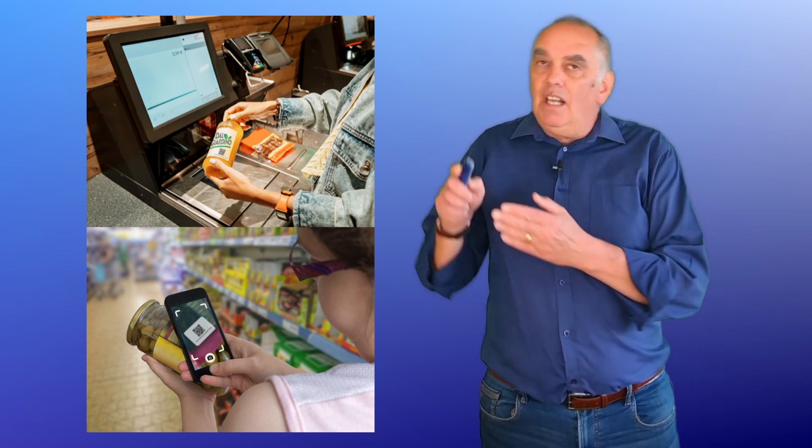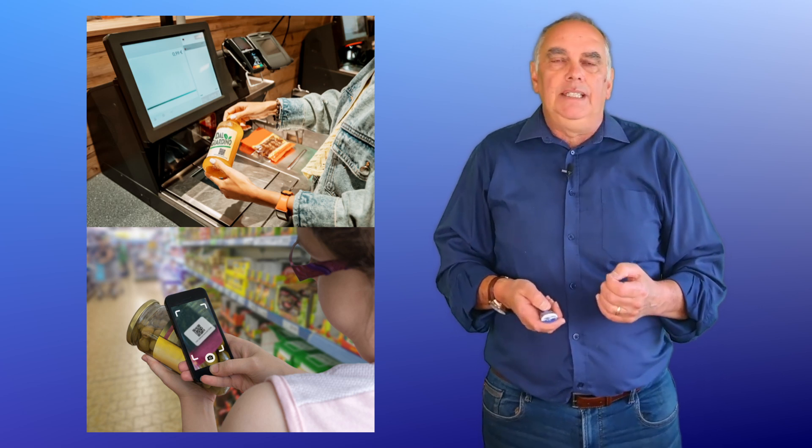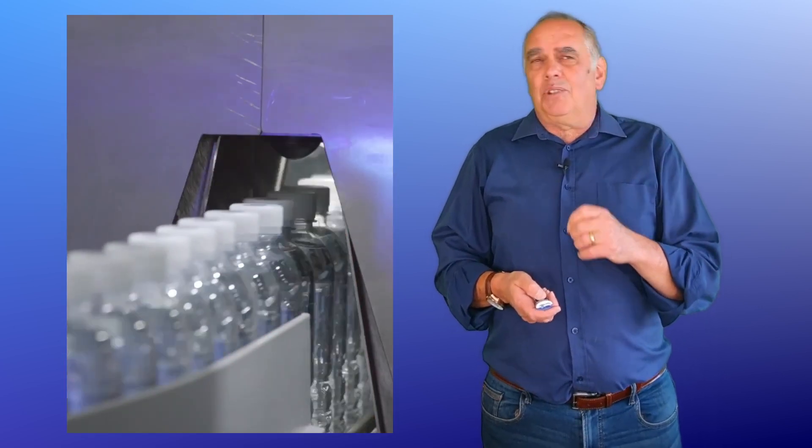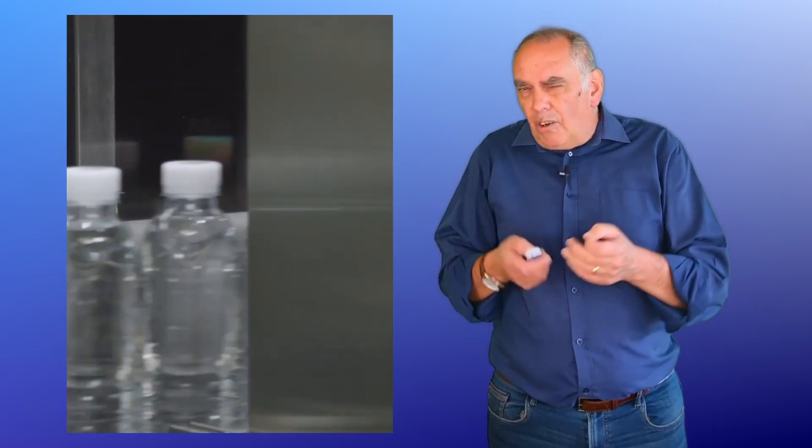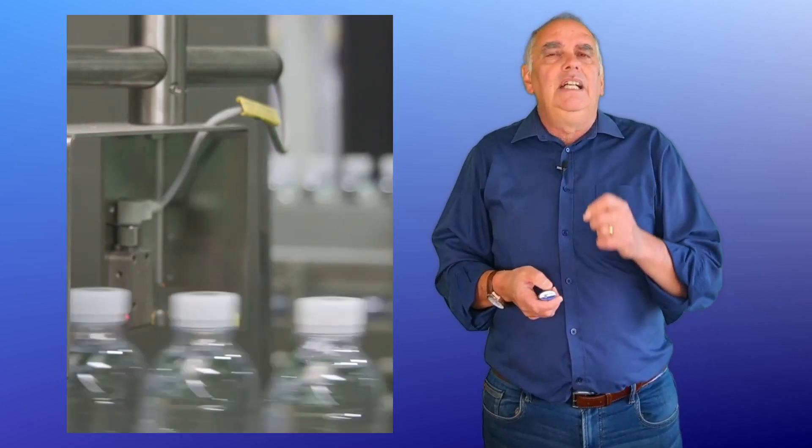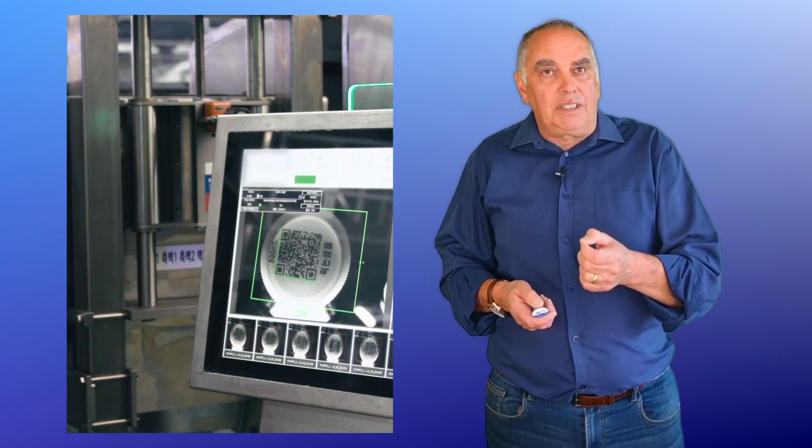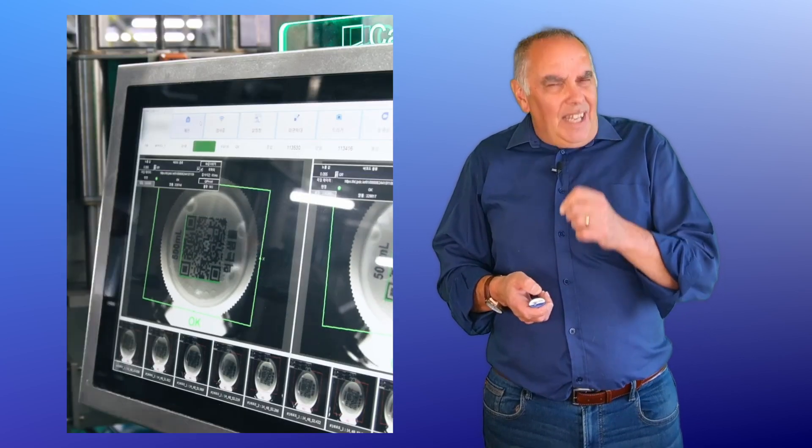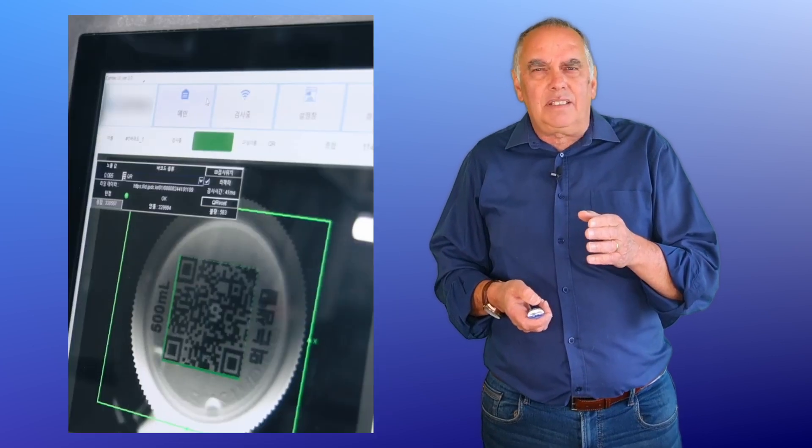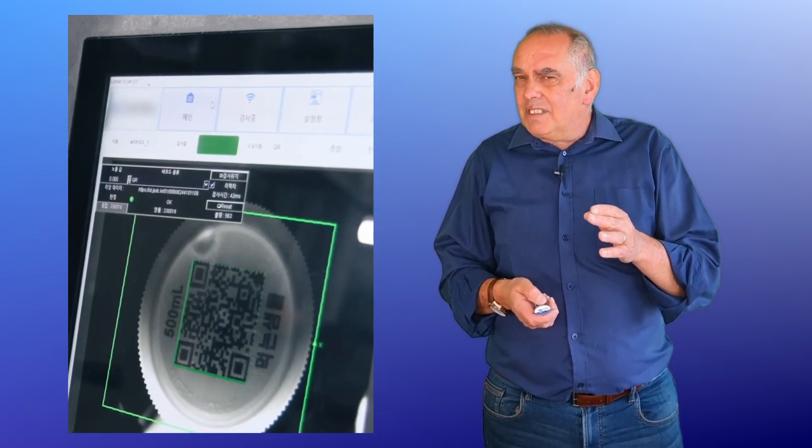Now barcodes are usually printed at high speed when the packaging is created and then fed into a separate production line process later. And you can do that with QR codes powered by GS1 as well, of course. But if you want to include things like batch numbers or expiry dates to unlock some of those rich use cases, they'll need to be printed on the production line itself, not pre-printed on the packaging.